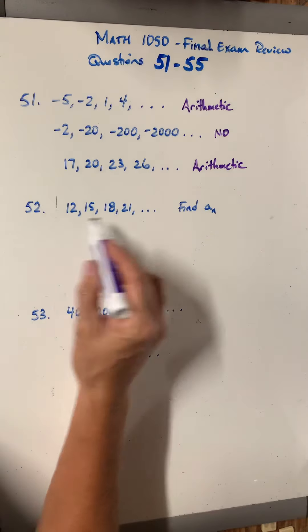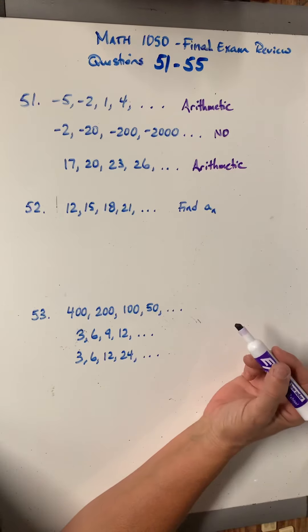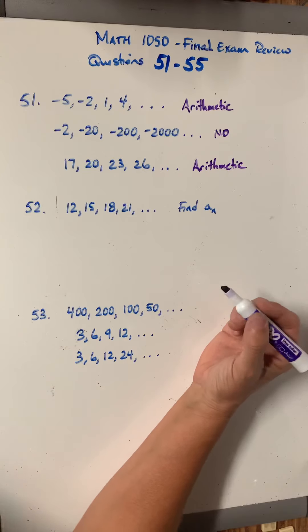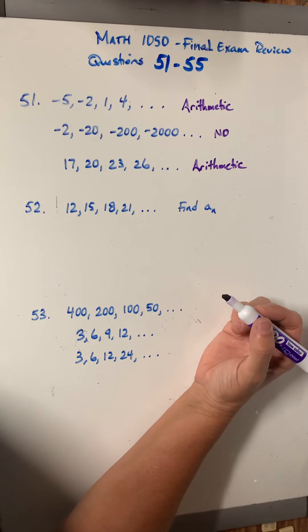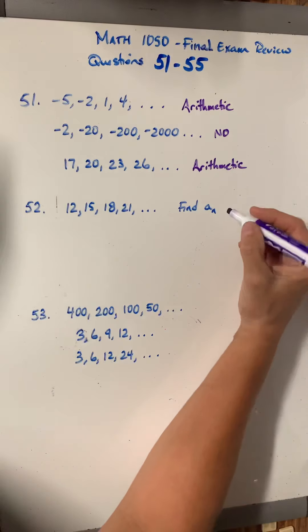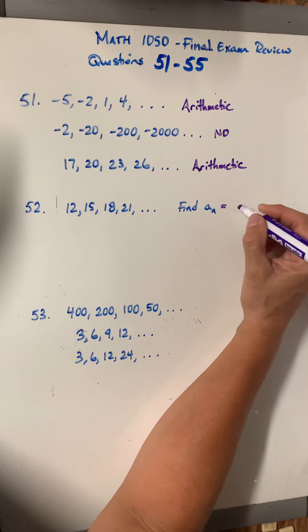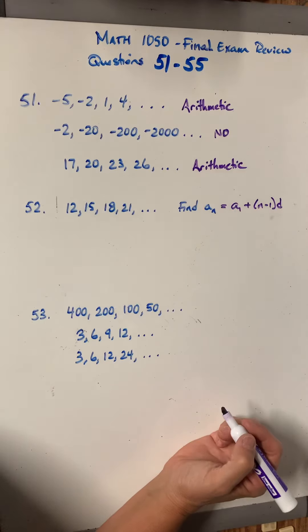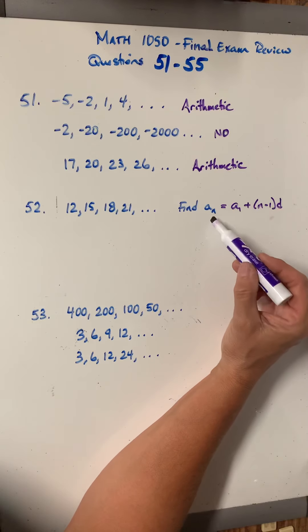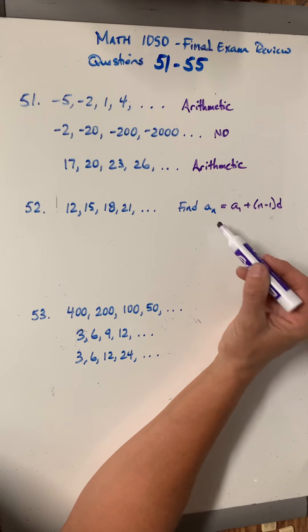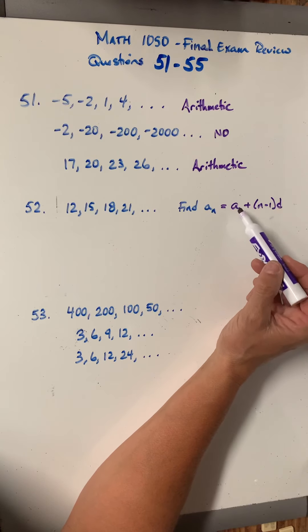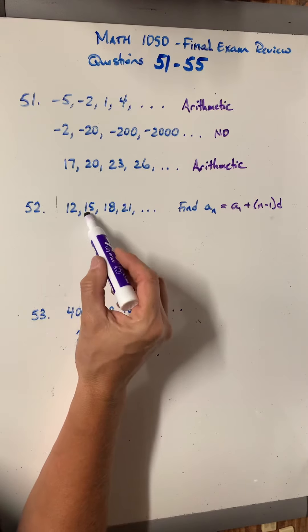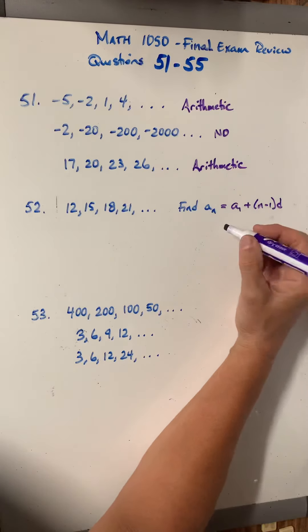Okay. Question 52 gives us an arithmetic sequence and says find a sub n. So it's an equation for the nth term. And we have a formula for this, which is probably on your formula sheet. And it goes like this. a sub n equals a sub 1 plus n minus 1 times d. So what you want to do, since you don't know what n is, they're not asking you for a specific term. So that's always going to be the unknown. But you do know what the first term is, a sub 1, and you do know what the common difference is. So what are we doing each time to get to the next term? We're adding 3. So d is going to be 3.